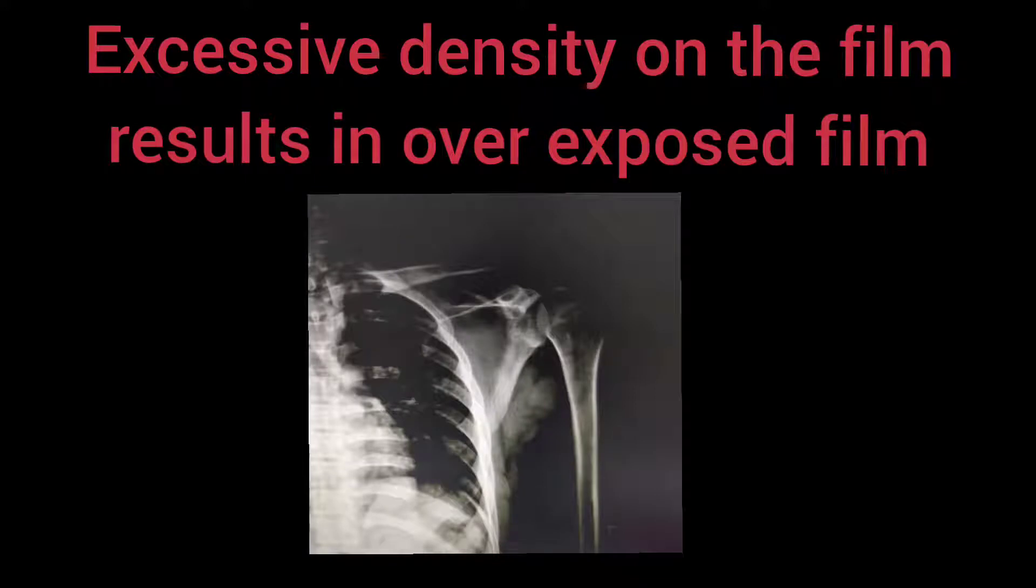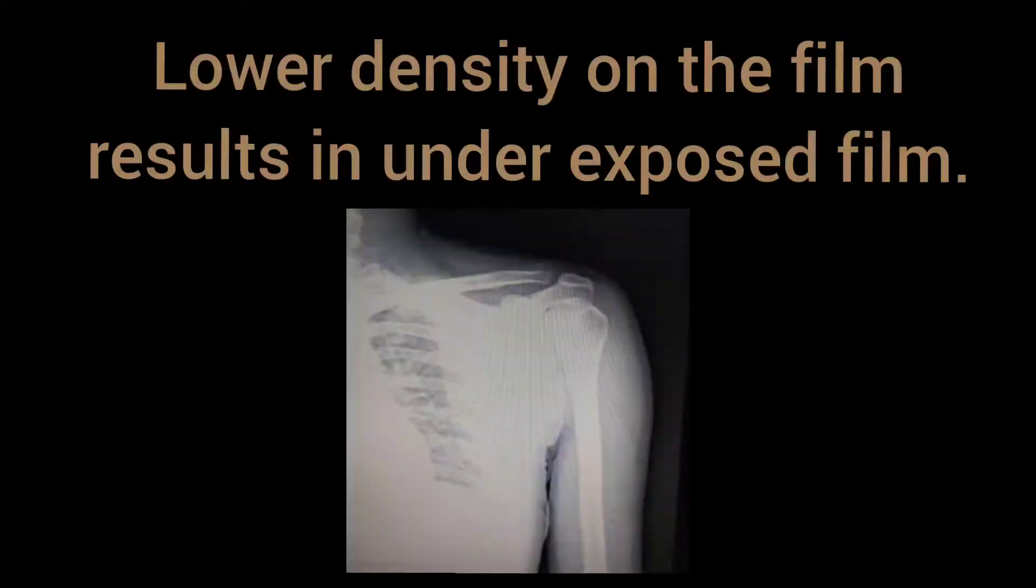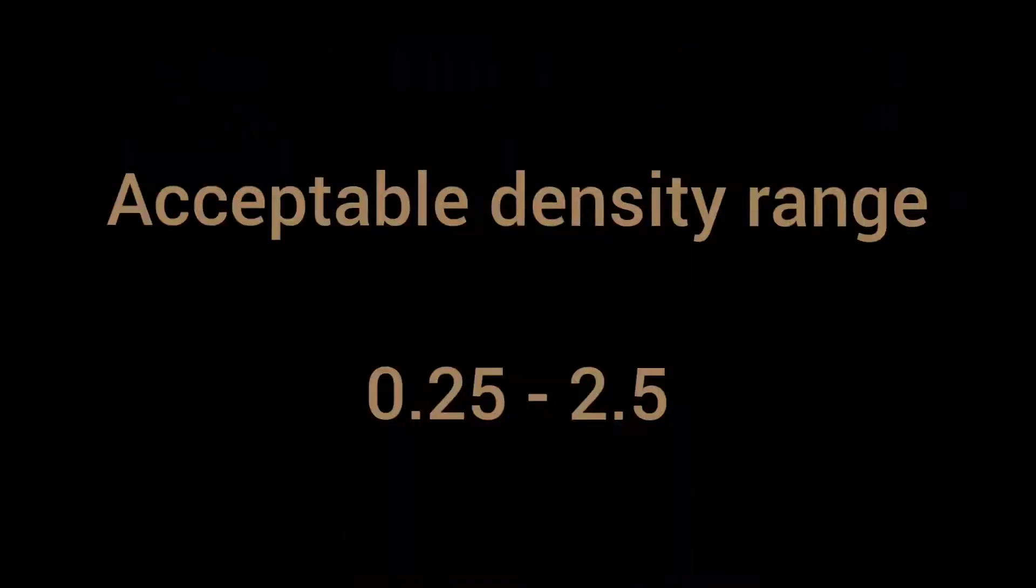Excessive density on the film results in overexposed film and lower density on the film results in underexposed film. The range of acceptable density is between 0.2 to 2.5.